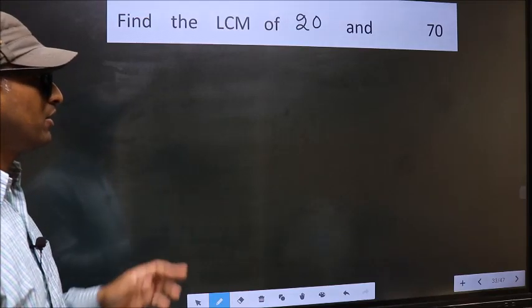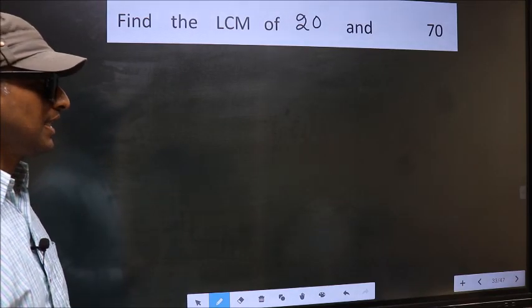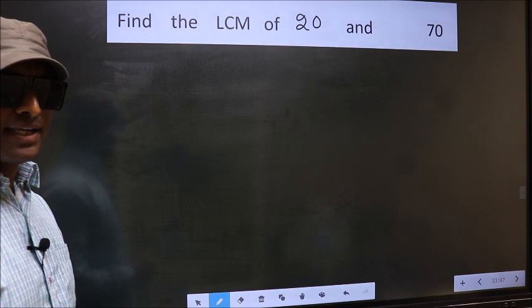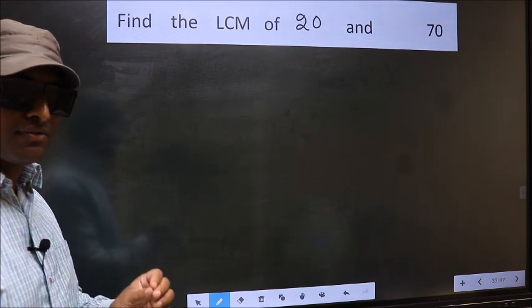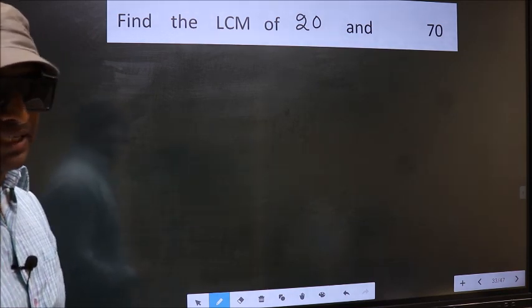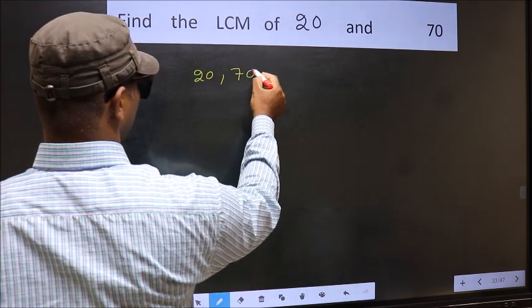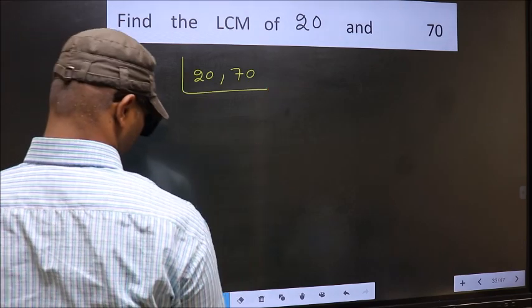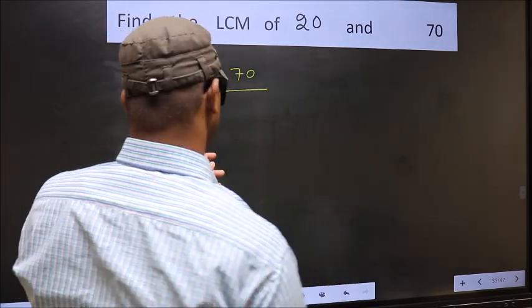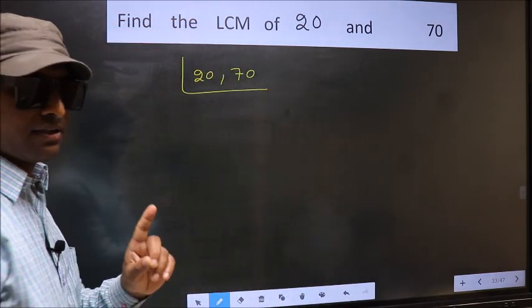Find the LCM of 20 and 70. To find the LCM, first we should frame it in this way: 20, 70. This is your step 1.